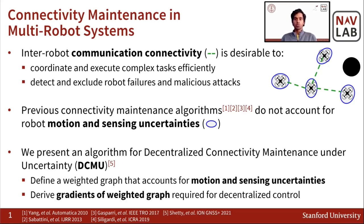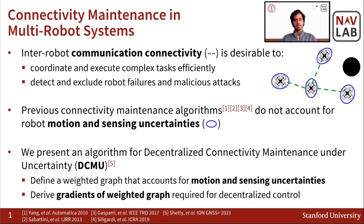In this work, we present an algorithm for decentralized connectivity maintenance under these uncertainties. We first define a weighted graph that accounts for motion and sensing uncertainties, and then we derive the required gradients for a decentralized controller used for connectivity maintenance.